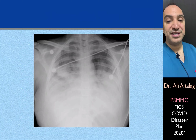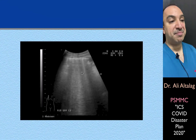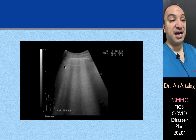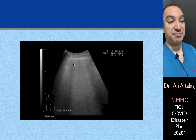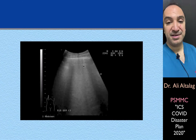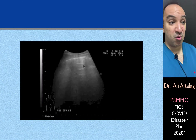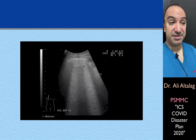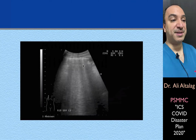In pulmonary edema, you will see plenty of B-lines — quite visible B-lines throughout the chest, which suggests pulmonary edema.